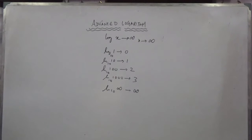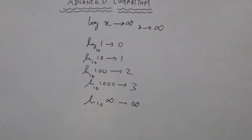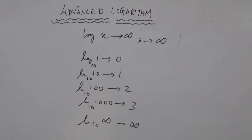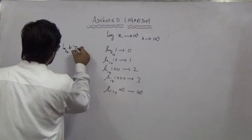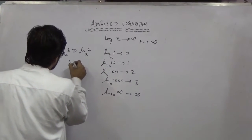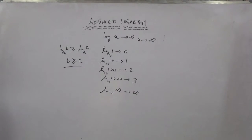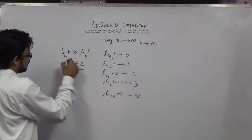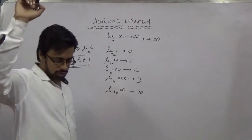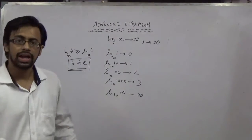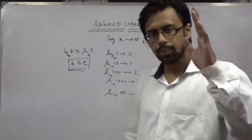Now let me start with some of the advanced parts: logarithmic inequalities. For example, if log B base A is greater than or equal to log C base A, then B is less than or equal to C. This part is very important with respect to log inequalities.